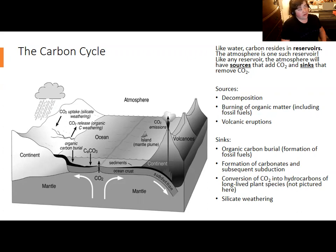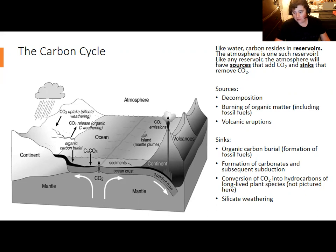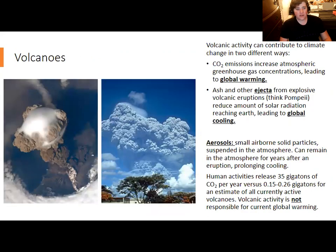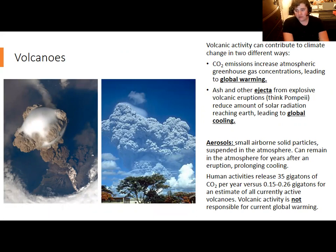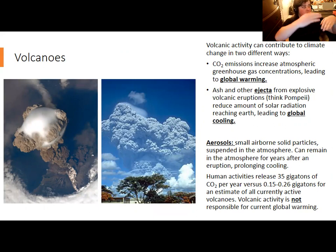Minerals containing silica are removed by slightly acidic rainwater, and the acid in that rainwater actually comes from CO2 that the rainwater interacts with. Volcanoes can affect global climate in two separate ways. Volcanic eruptions do emit CO2, and a lot of that CO2 actually comes from carbonates that have previously been subducted — remember that many volcanoes appear at convergent plate boundaries at subduction zones.